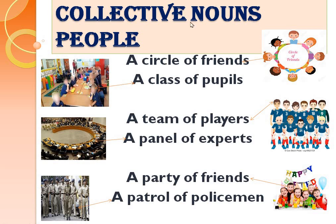Here you can see some examples of collective nouns representing people. A circle of friends — she is his friend, he is his friend, they all are friends, so: circle. A class of pupils. A team of players — you can see how many players are there. A panel of experts — many people knowing one subject or having expertise in one topic or concept, they are creating a panel. A party of friends — you can't do any party or celebration alone.